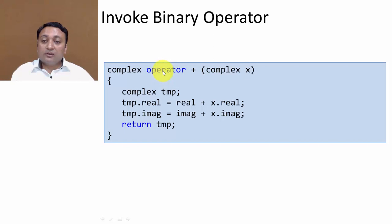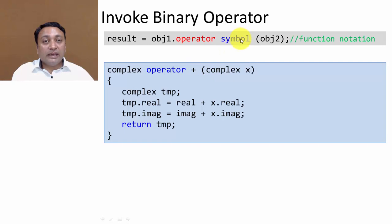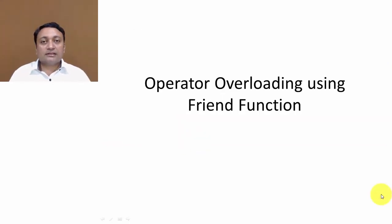We know how to write an operator function and how to invoke a binary operator. Suppose you have an operator function — it can be invoked with two methods. First is function notation: write object_one dot operator and the operator symbol, passing object_two as argument. The second is operator notation used in operator overloading: object_one, your symbol, object_two — for example, object_one plus object_two.